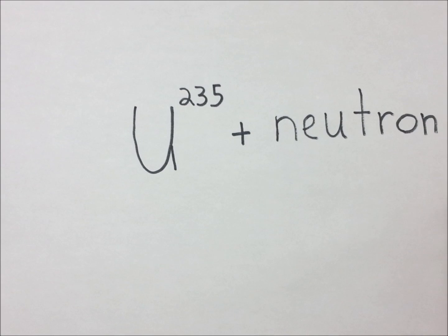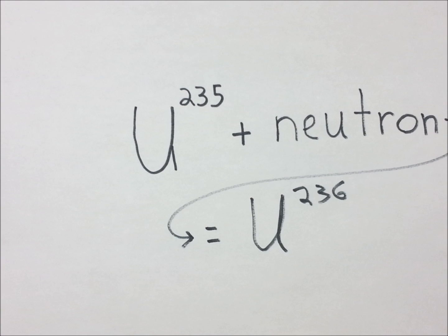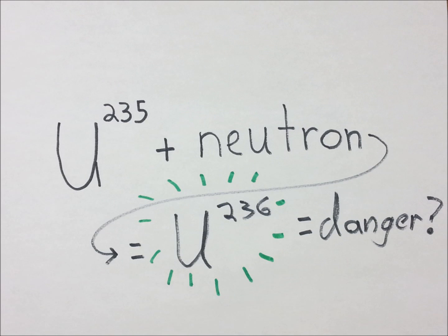So basically, an isotope is an element with a different number of neutrons. All a radioactive isotope is, is an unstable version of a stable element.